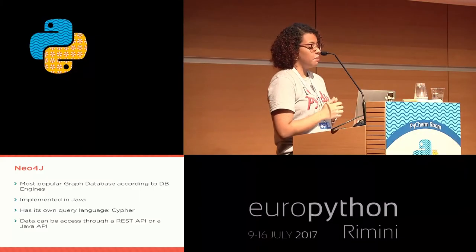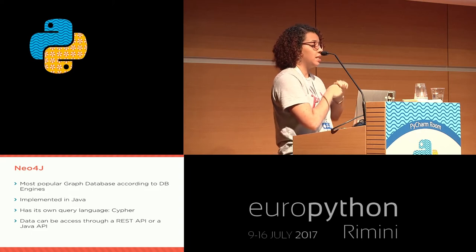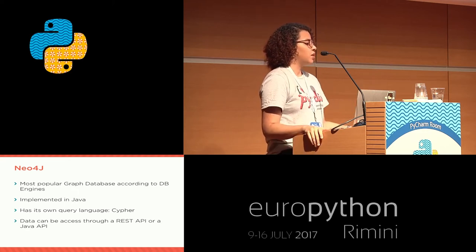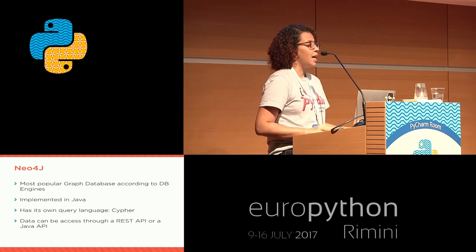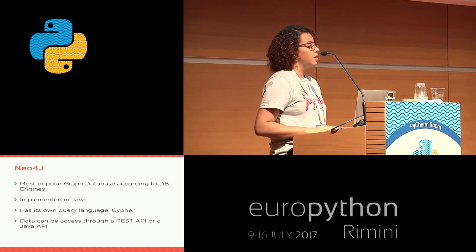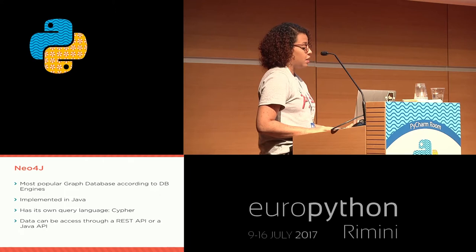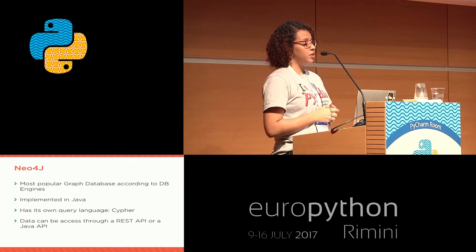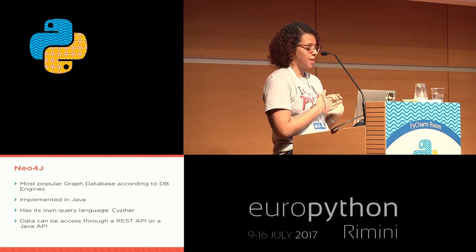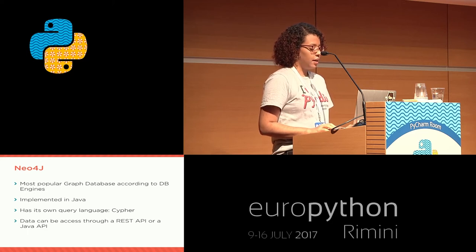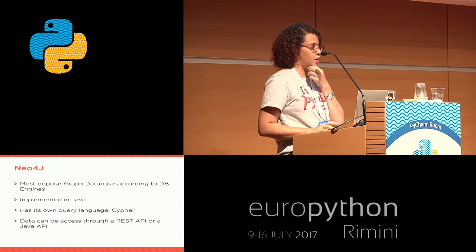I decided to go deeper into Neo4j because it is the most popular graph database according to DB Engines - a website that tracks and ranks all databases, both relational and NoSQL. Neo4j is implemented in Java, has its own query language called Cypher, and data can be accessed through a REST API or a Java API.